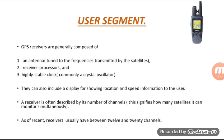The user segment consists of GPS receivers generally composed of antennas, receiver processors, and a high-stability clock. They can also include a display for showing location and speed information to the user. A receiver is often described by its number of channels; as of recent, receivers usually have between 12 and 20 channels.